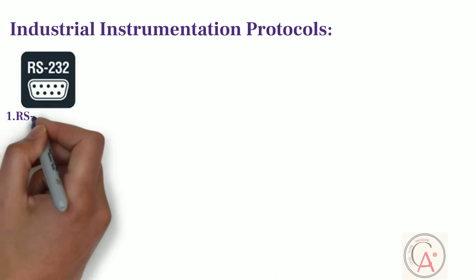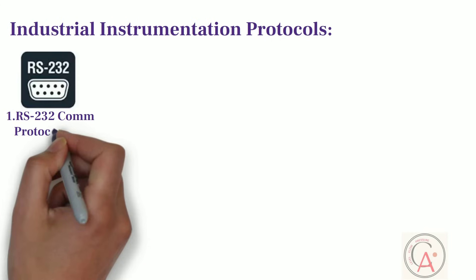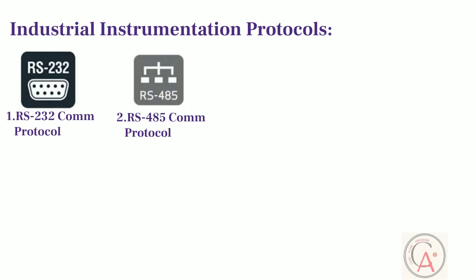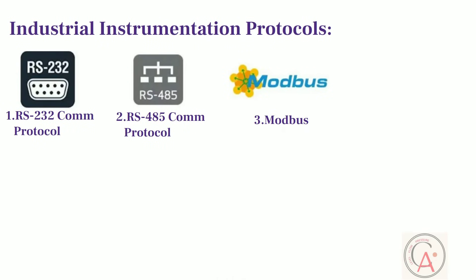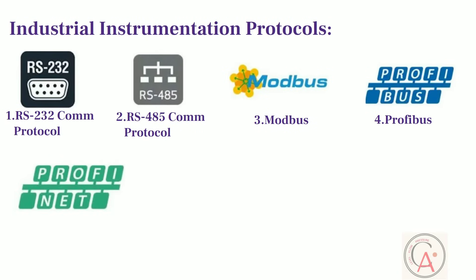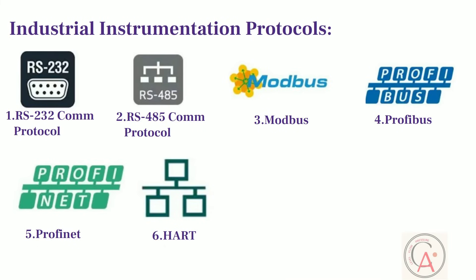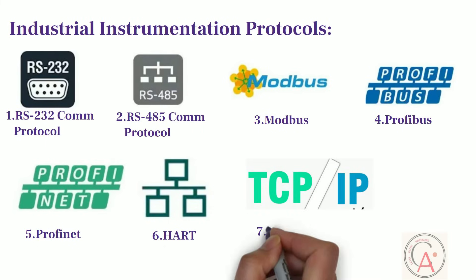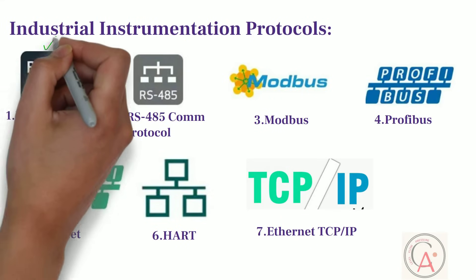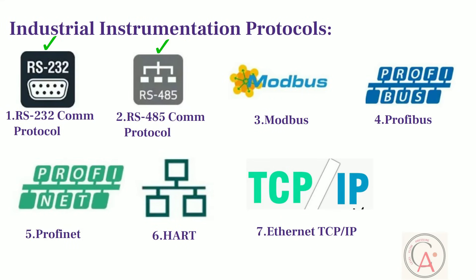The first type of communication protocol is RS-232. The second is RS-485. The third is Modbus. The fourth is Profibus. The fifth is Profinet. The sixth is Ethernet TCP/IP. In this video, I will cover the first two communication protocols, and the rest will be covered in the second and third parts of the video series.